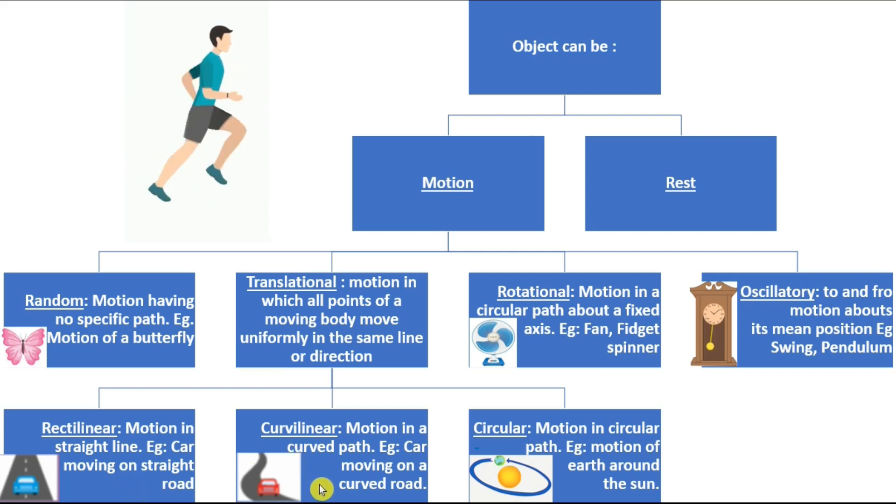Then we have the curvilinear motion. Motion in a curved path. Translational motion only. Entire body should move in a curved path. For example, car moving on a curved road.